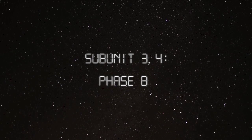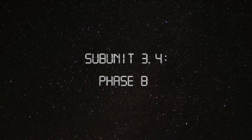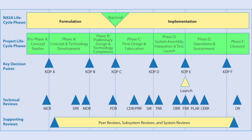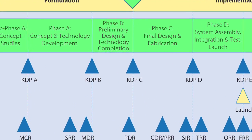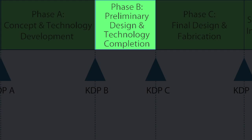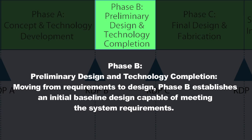Subunit 3.4, Phase B. The final phase in the formulation period, Phase B, focuses on developing detailed requirements from the high-level requirements defined at the System Requirements Review and establishing a baseline system design that's consistent with all of these requirements. Phase B is also a time to complete any technology work required to ensure that all technologies are ready for implementation as you move forward in the lifecycle.